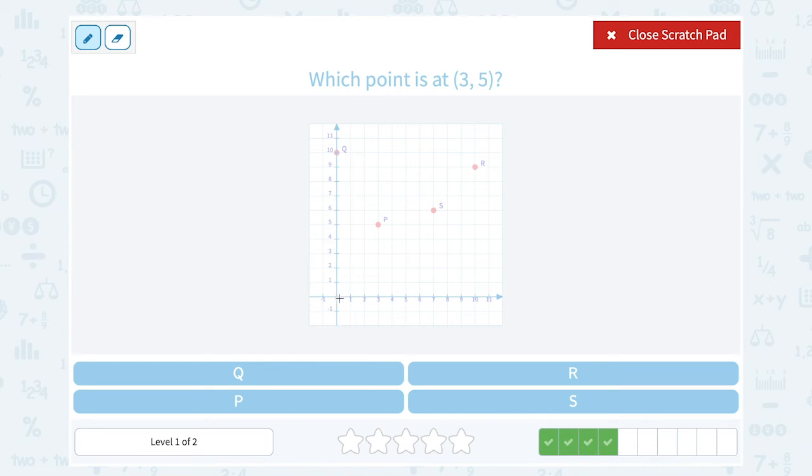Which point is at (3, 5)? Okay, well (3, 5) means 3 to the right and up 5. So I'm going to go right 3 and up 5. So I'm in line with 3 on my x axis and in line with 5 on the y axis. And that would be point P.